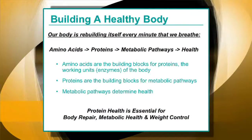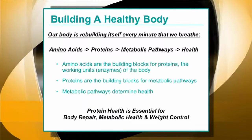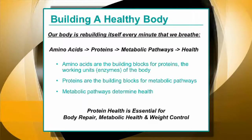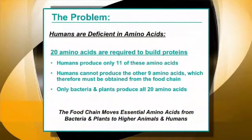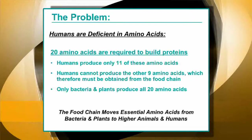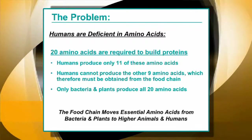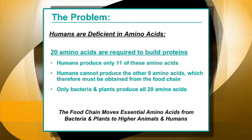Now I want to teach you how to build a healthy body. We need to understand first that our body is rebuilding itself every minute that we breathe. According to this pathway, amino acids are the building blocks of proteins, which are the building blocks of metabolic pathways, which determine health. The problem is that humans are deficient in amino acids. This is because we require 20 amino acids as building blocks for proteins, but humans can only produce 11 of those amino acids.